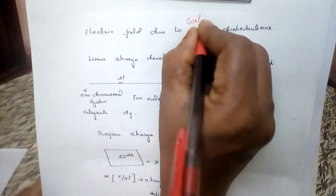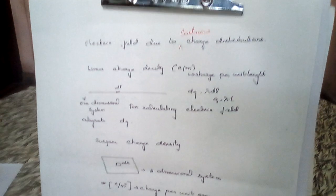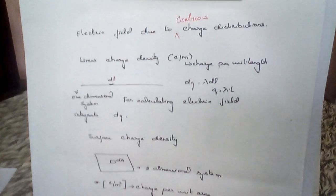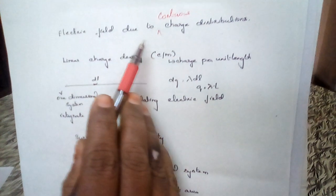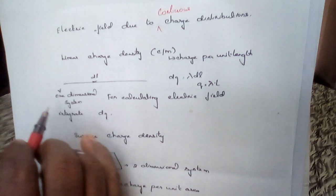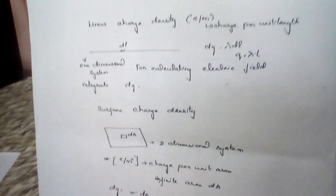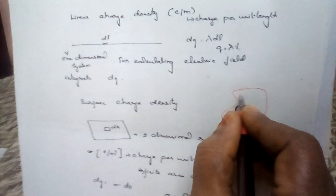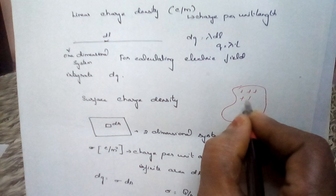Next is the electric field due to charge distribution — continuous charge distribution. The electric field due to point charges we have discussed, and now we are going to discuss about continuous charge distribution. In continuous charge distribution, we are going to see about the line charge density, surface charge density, and volume charge density. In continuous distribution, if there is a field, the charges are distributed in a continuous manner rather than being discrete.